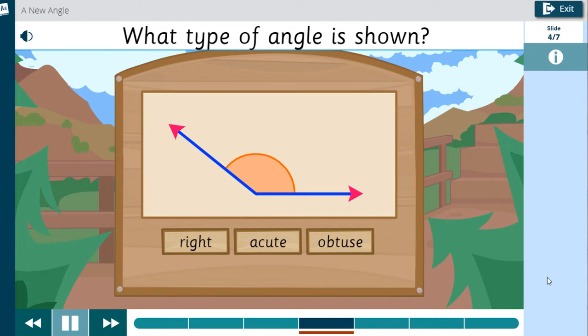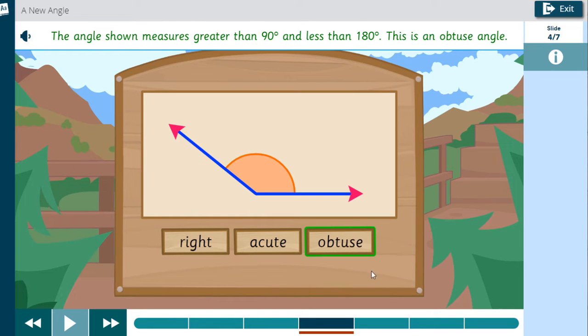What type of angle is shown? The angle shown measures greater than 90 degrees and less than 180 degrees. This is an obtuse angle.